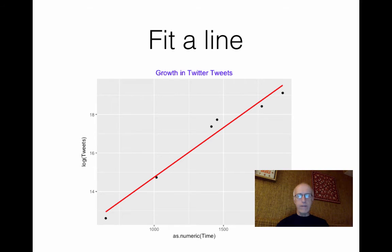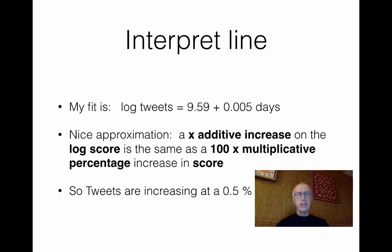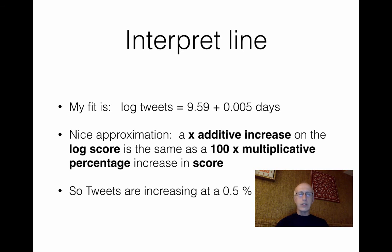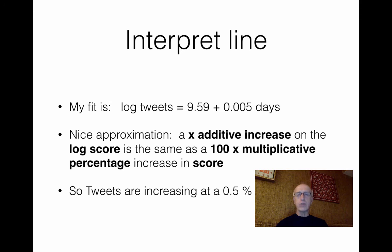I'm going to focus on the slope. When I fit this line, I get: log(tweets) = 9.59 + 0.005 × days, where days is days after the beginning of Twitter. Here's a nice approximation: when you have a log base-e expression, if the slope equals x, that additive increase on the log scale is approximately equivalent to a 100x multiplicative percentage increase. So taking 0.005 and multiplying by 100 gives 0.5, meaning tweets per day are increasing at a 0.5% rate each day. That's a pretty simple and nice interpretation, and it shows the advantage of transforming y on the log scale.